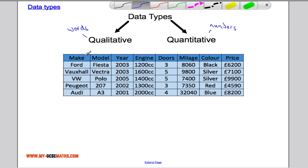If you have a look over here you can see that the make and model, they're all words. So Ford, Vauxhall, VW, Fiesta, Vectra, Polo, etc. They're all words so that is a qualitative data type.